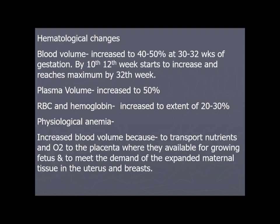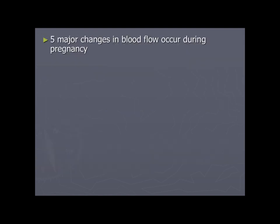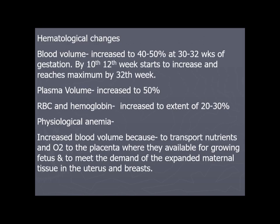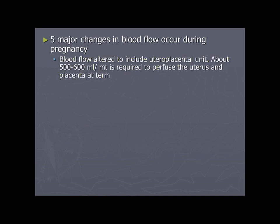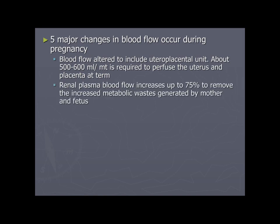The increase in blood volume serves to transport nutrients and oxygen to the placenta for the growing fetus and to meet the demand of expanded maternal tissues in the uterus and breast. Five major changes in blood flow occur during pregnancy: blood flow to the uteroplacental unit increases to 500–600 ml/min at term; renal plasma blood flow increases by 75% to remove increased metabolic waste.